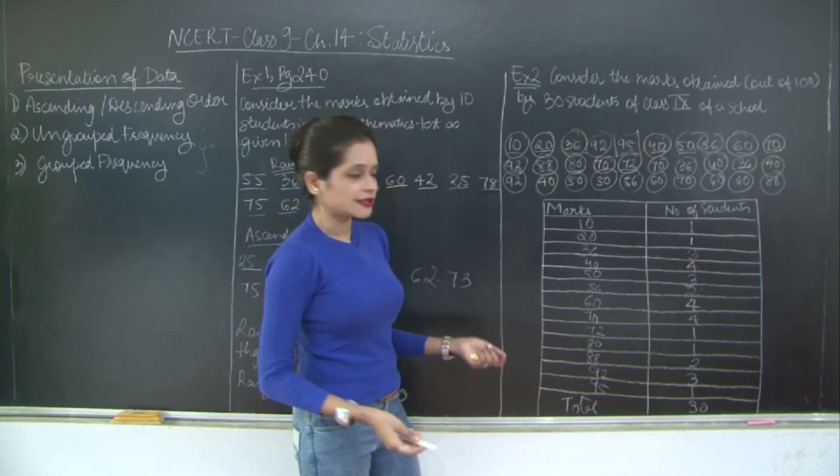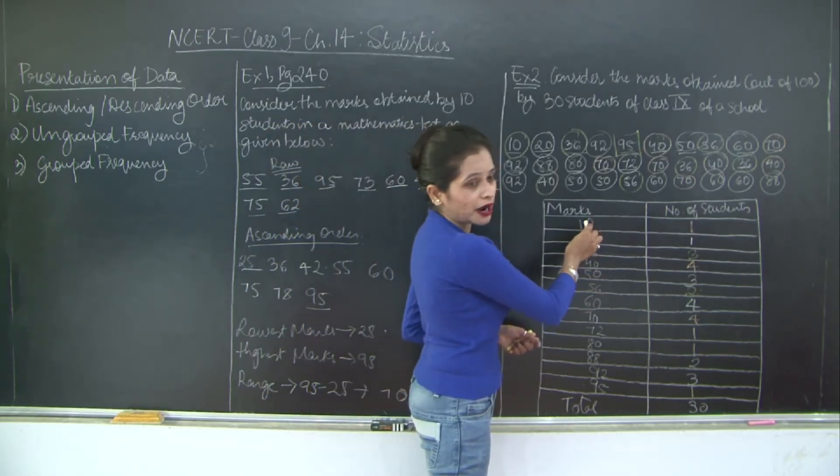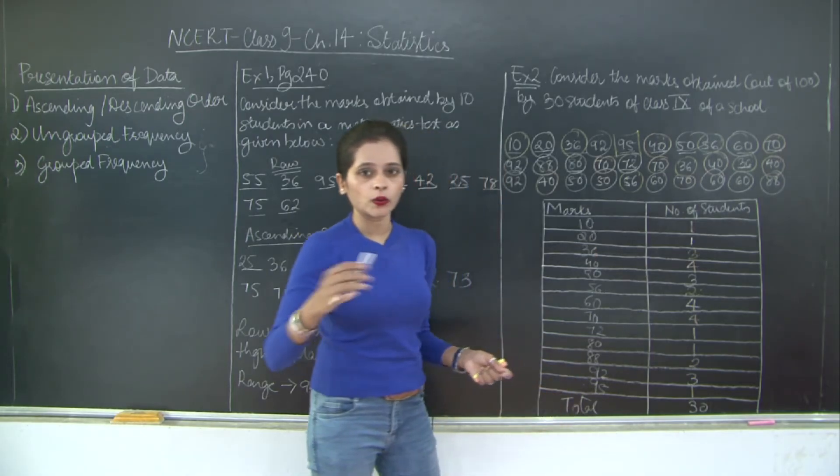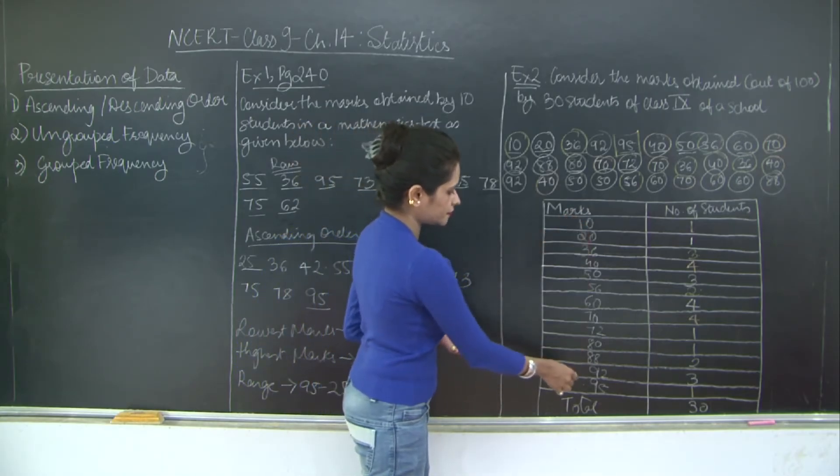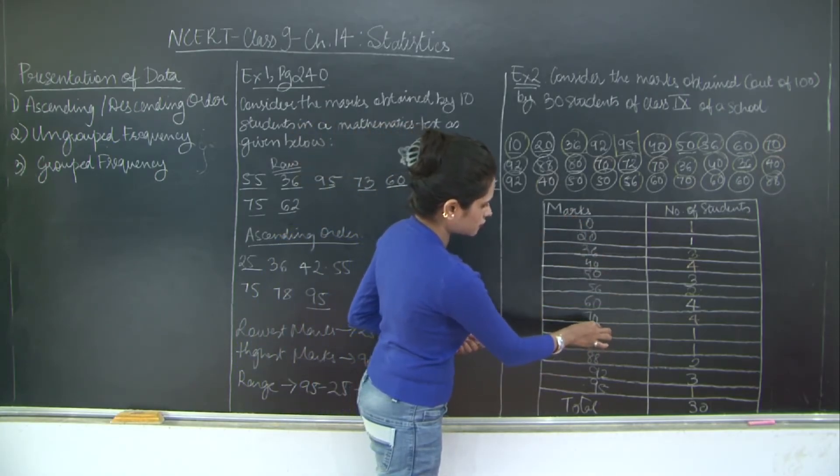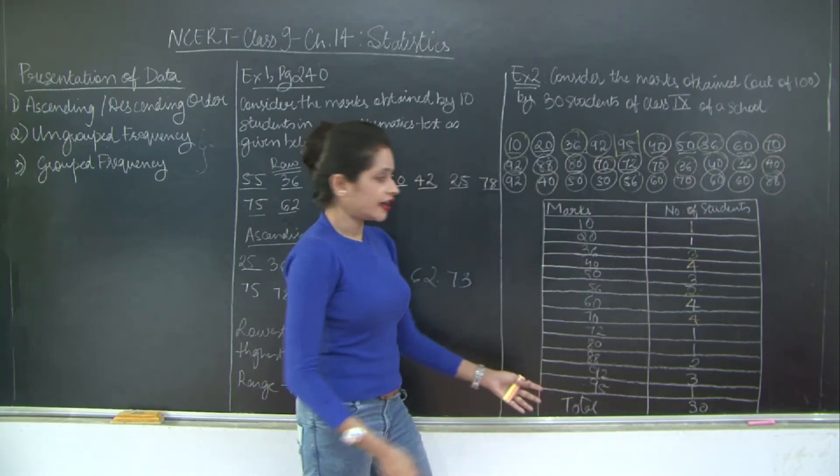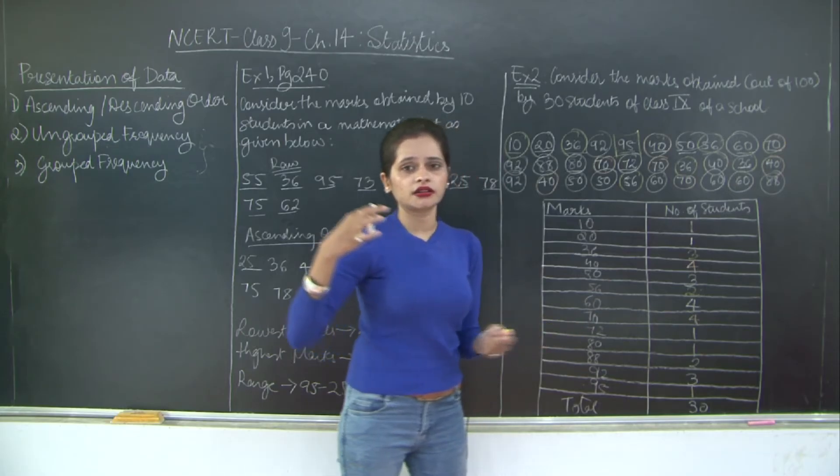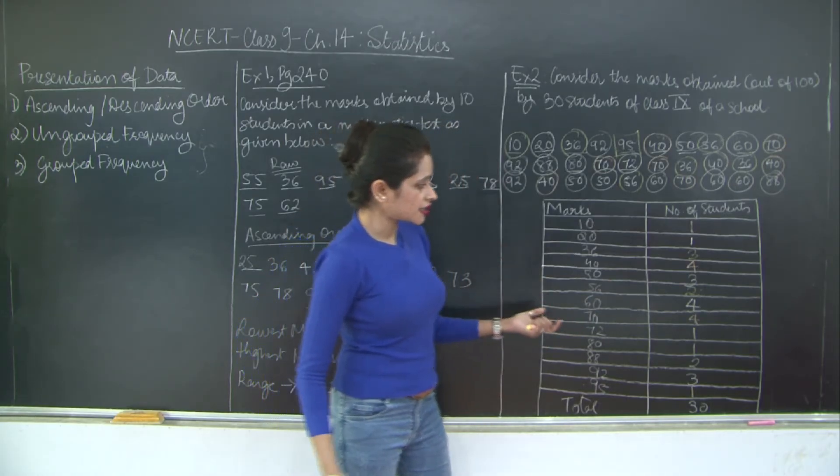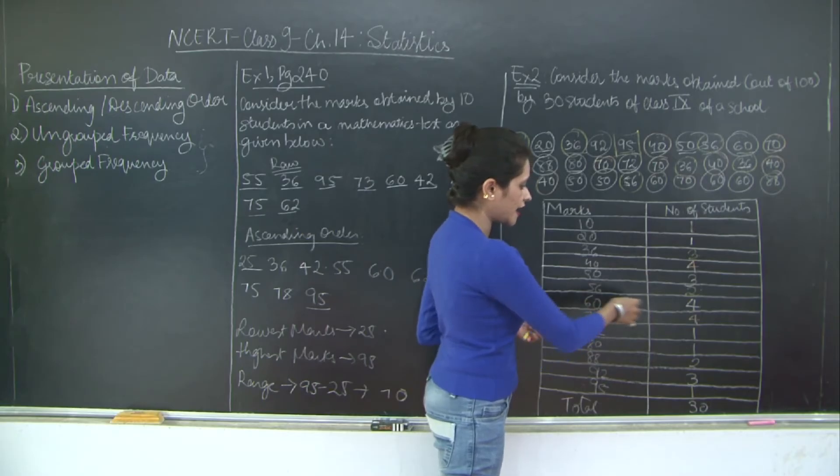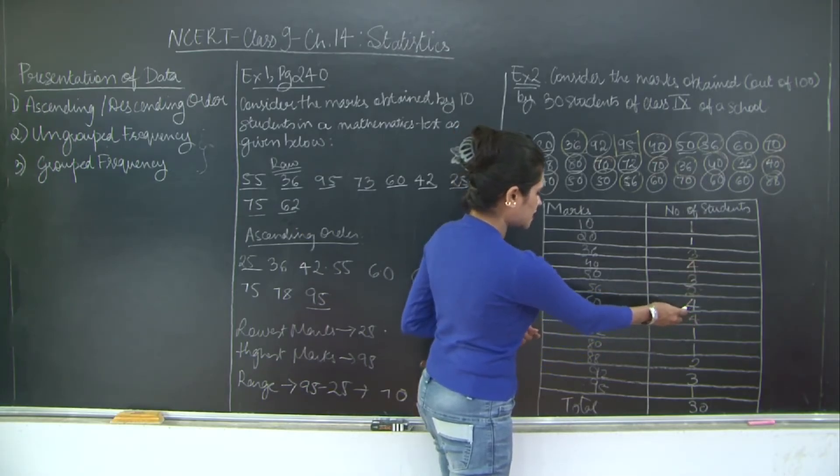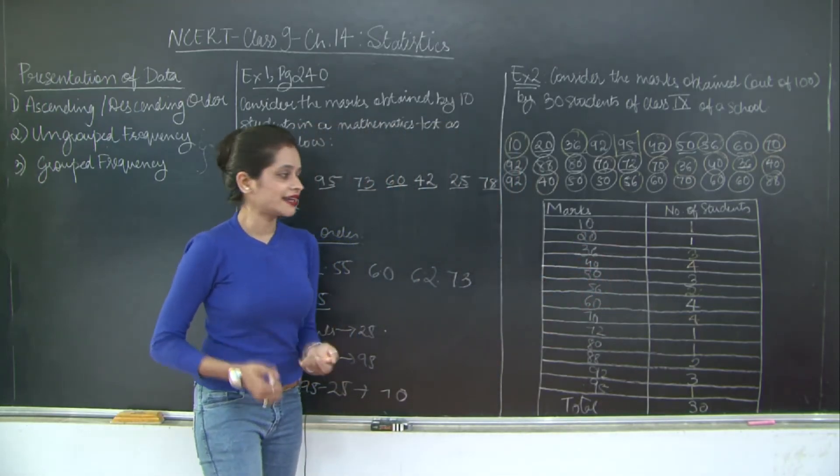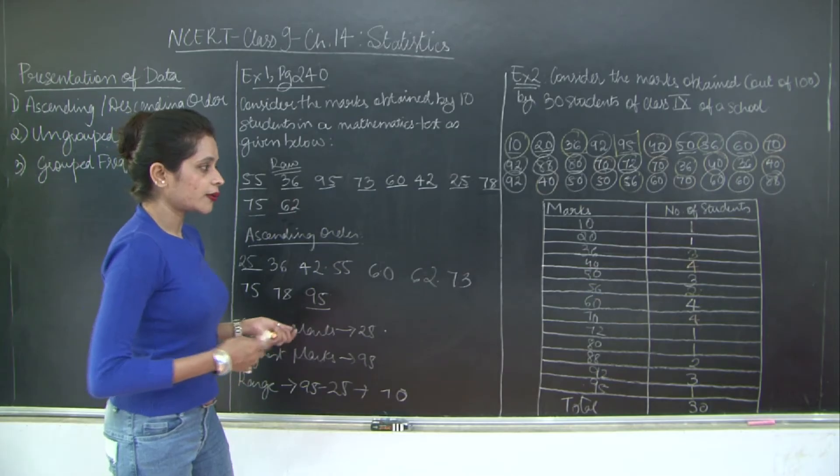And also what we can interpret from this data. So this is data in raw format. We have organized it. We have done an analysis of the records of the students who belong to different categories. And what do we infer? That the minimum number of students belong to categories with marks 10, 20, 72, 80 and 95. And the marks secured by students, the highest category is for which marks 40, 60 and 70. So students in these 3 categories secured the highest number of marks. So this was our interpretation.